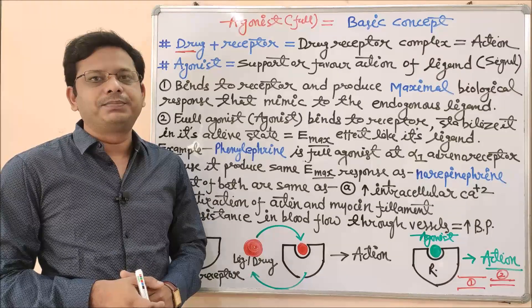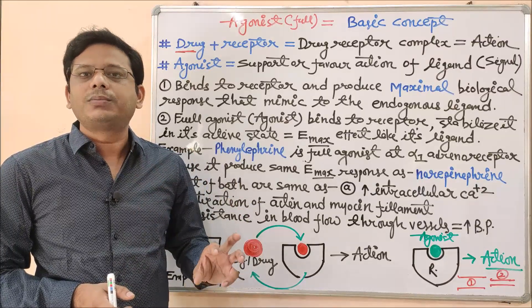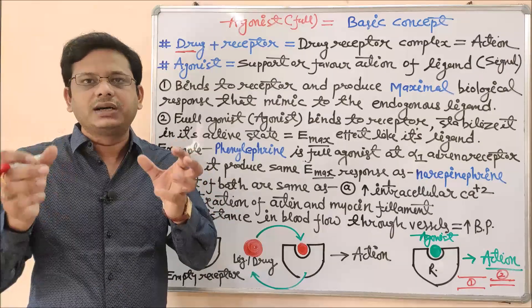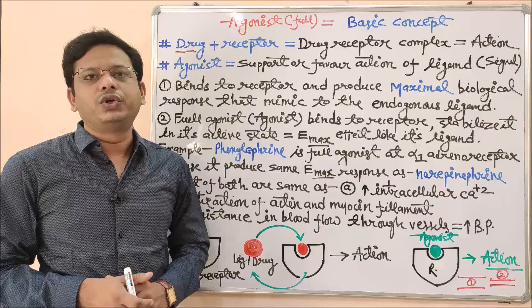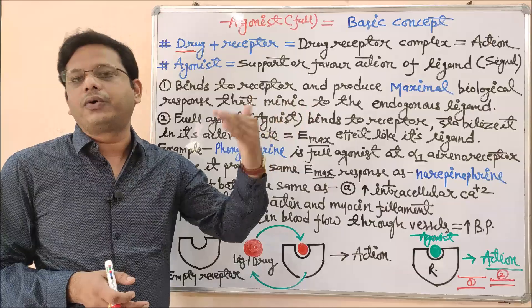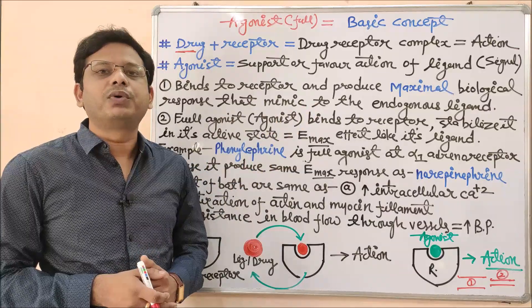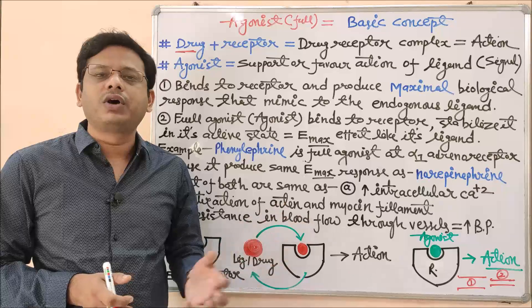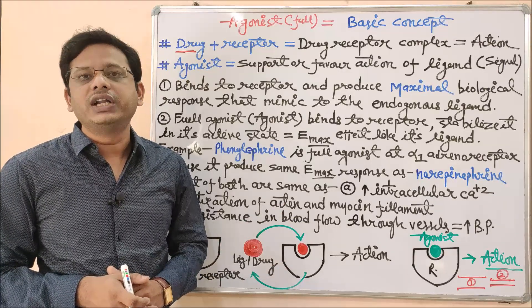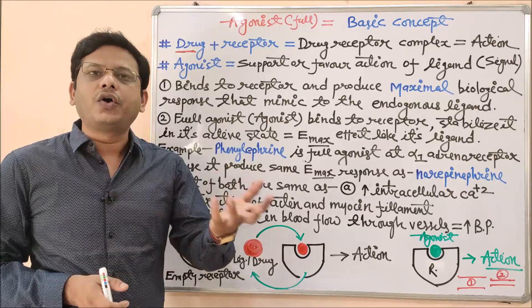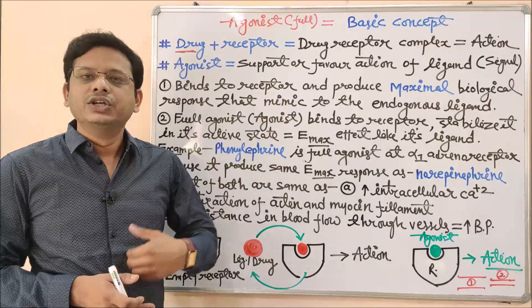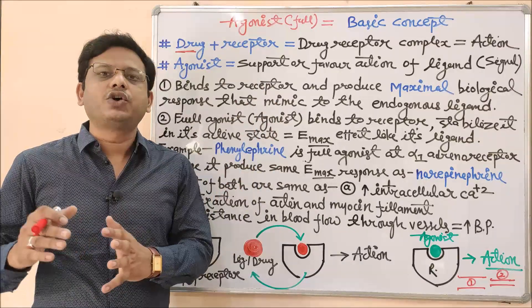The second word is 'receptor.' This is not exactly a classification of receptors — I am just explaining the simple meaning of the term. Any macromolecule available either on the surface of a cell or inside the cell, which performs recognition of a signal molecule or drug molecule so that it will produce a biological or pharmacological response, is simply known as a receptor. According to their availability, receptors may be on the surface or inside the cell — that classification is a topic for a later unit.